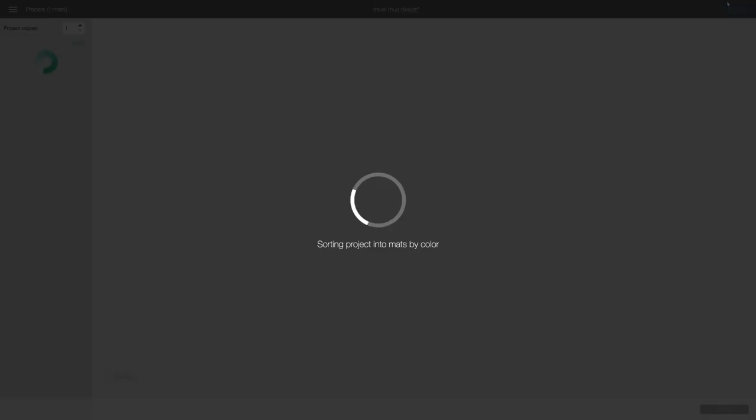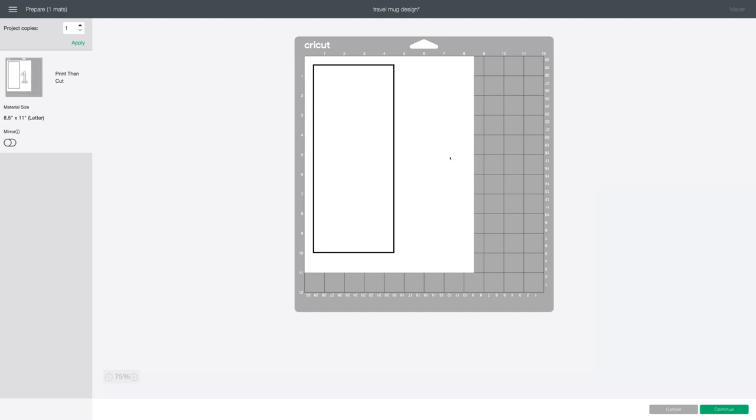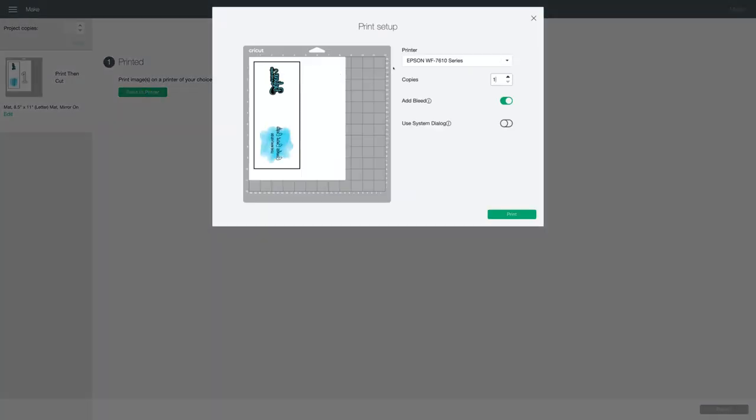We'll go make it. I'm going to mirror. I'll choose send to printer. Select my sublimation printer. My background is white so it doesn't matter if I turn the bleed off or on. It doesn't make a difference. I'll turn on use system dialog and click print.